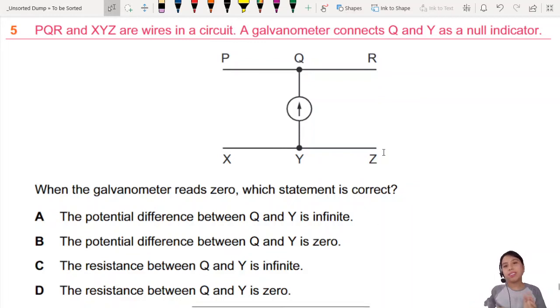Here we have a galvanometer circuit. Galvanometer, I don't know how you pronounce it. Anyway, we're going to use a galvanometer as a null indicator. Now this null experiment thing kind of pops up pretty frequently, especially in potentiometer circuits. Let's see, when a galvanometer reads zero, which statement is correct?